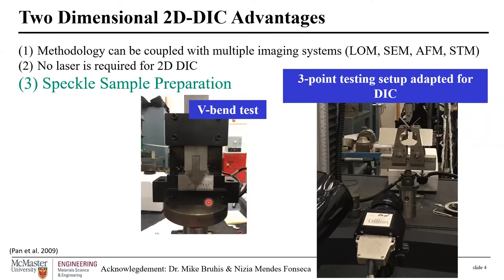To further emphasize the versatility of 2D DIC, here is a novel three-point bending testing setup adapted for DIC. As the material is bent, the bent surface is captured by a special mirror, and whatever is reflected from that mirror is captured by the CCD camera, with the light source positioned accordingly. This setup was developed at CAMC by Dr. Mike Bruthis in collaboration with PhD candidate Nizia.